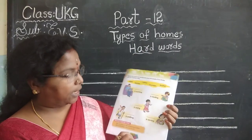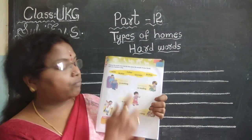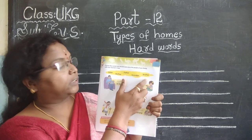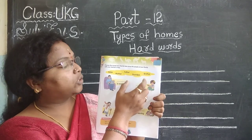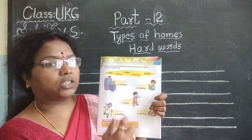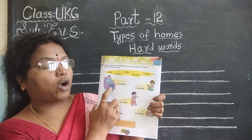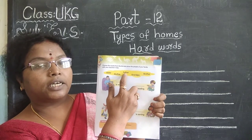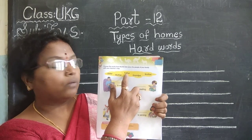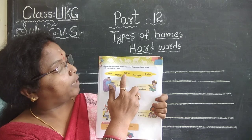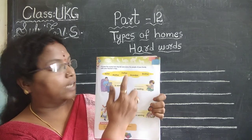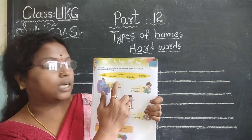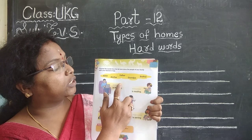Now turn the page. Page number 9. Here some fill-in-the-blank lines are there and some words are given. You have to choose the correct word and write here. Here, who is sitting? Father. So where is the father spelling? Here. Father. What is the spelling? F-A-T-H-E-R. So what you have to do? You have to write here. Start writing children. F-A-T-H-E-R. Father here.